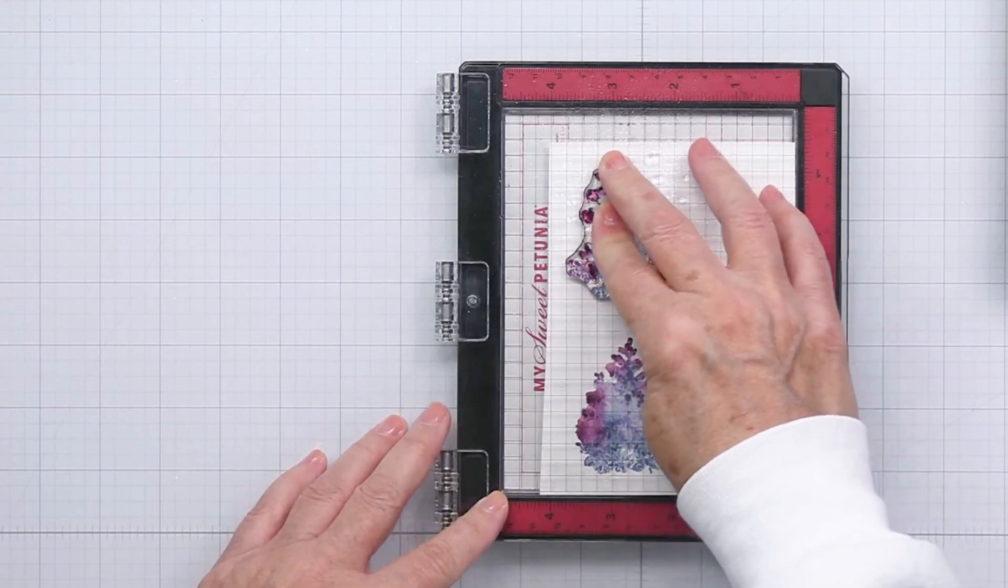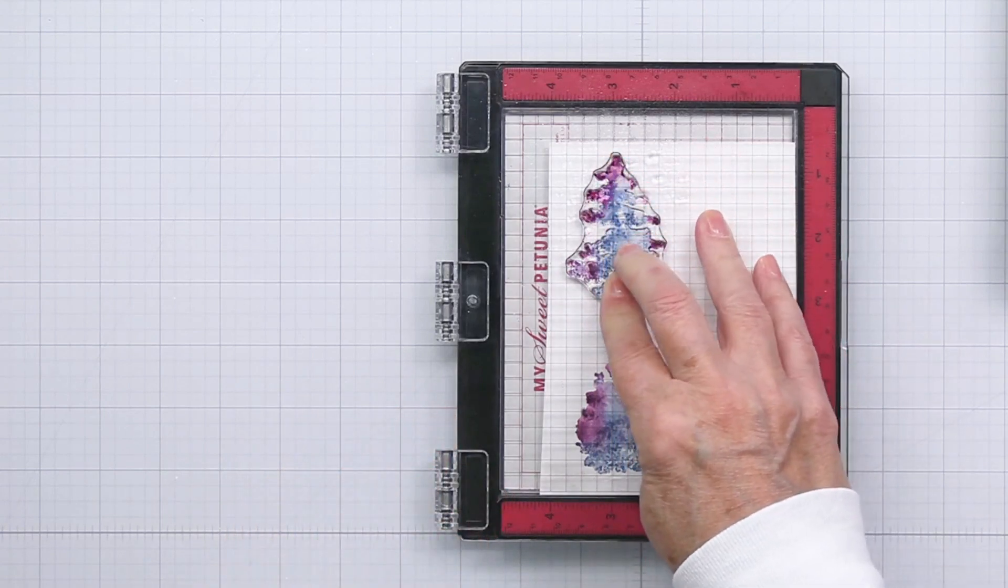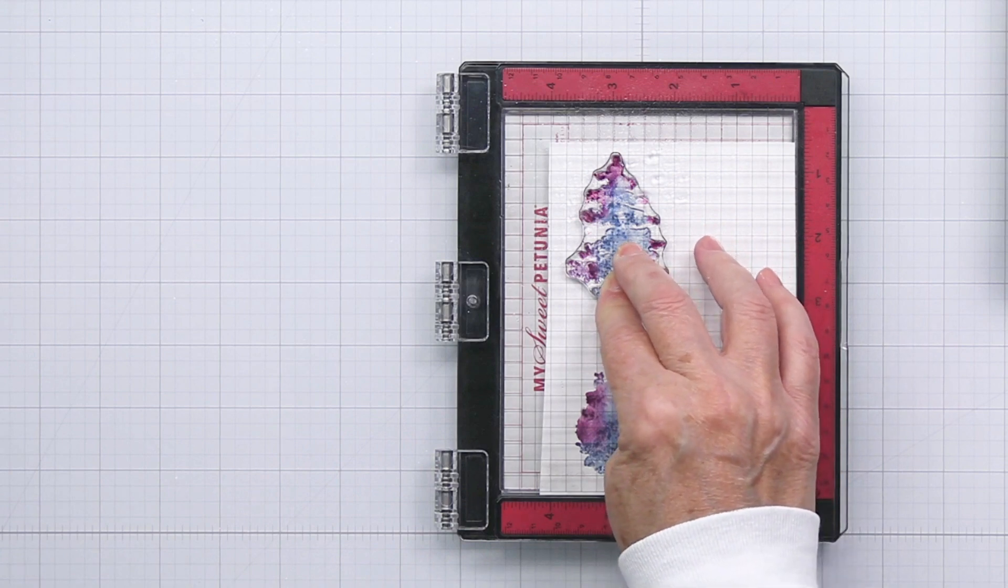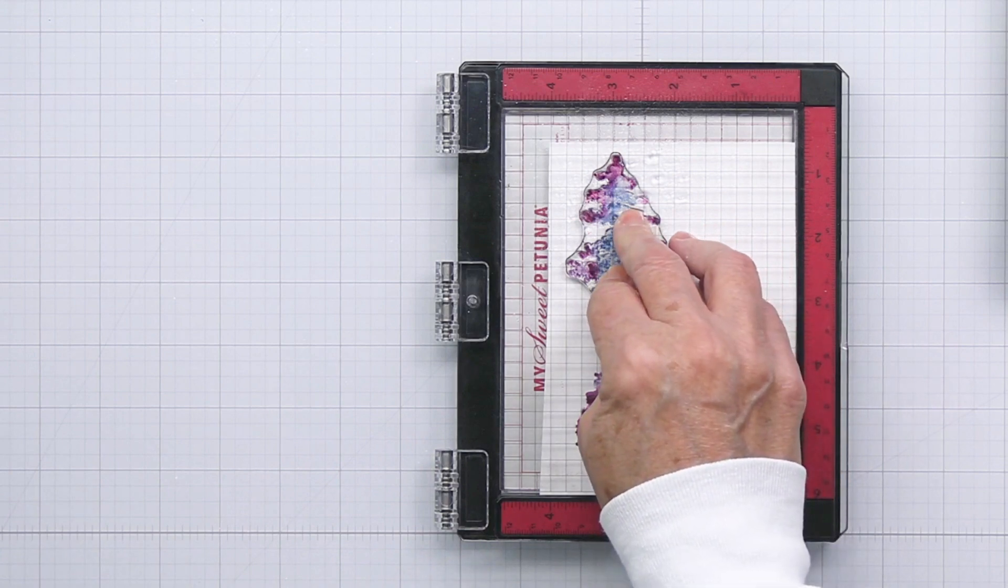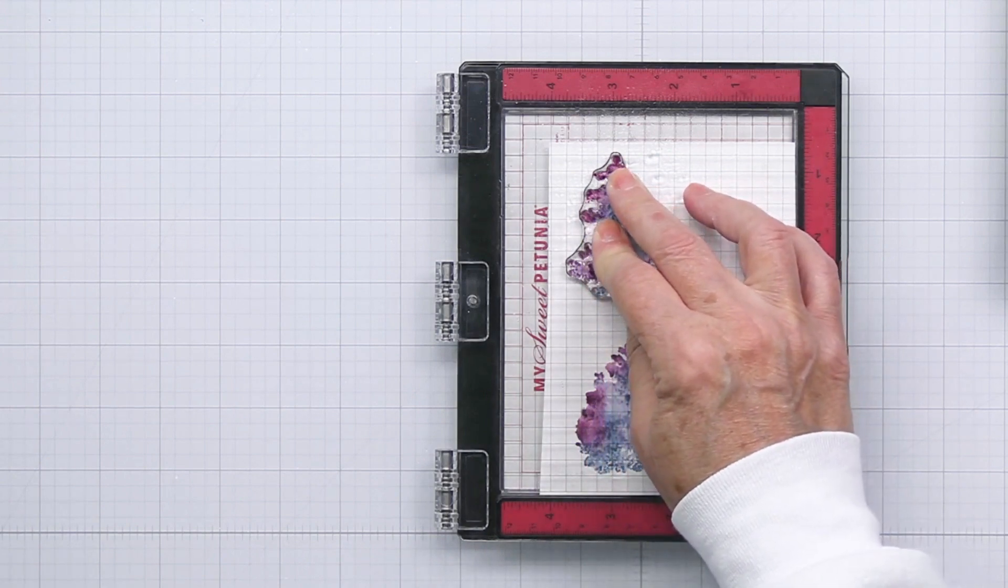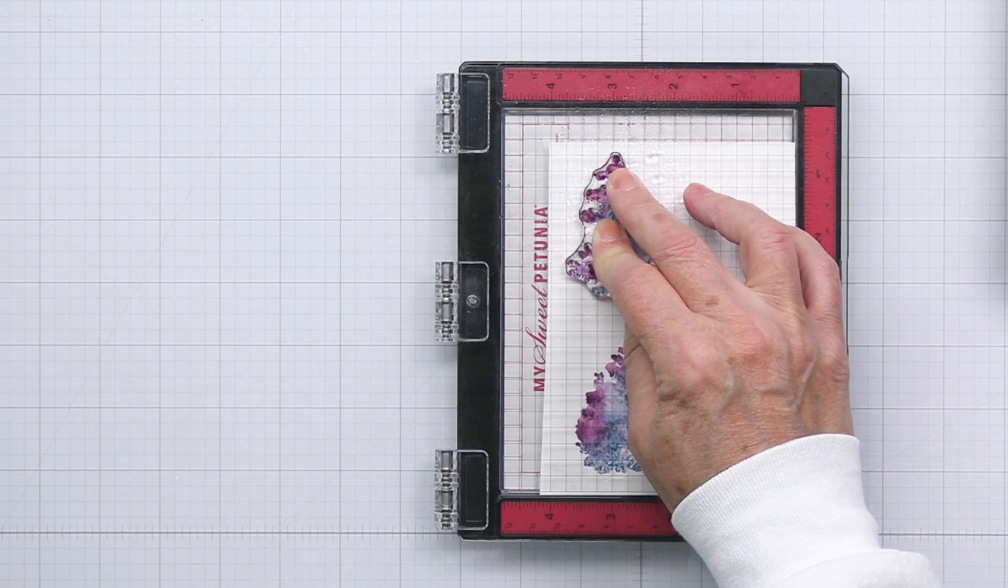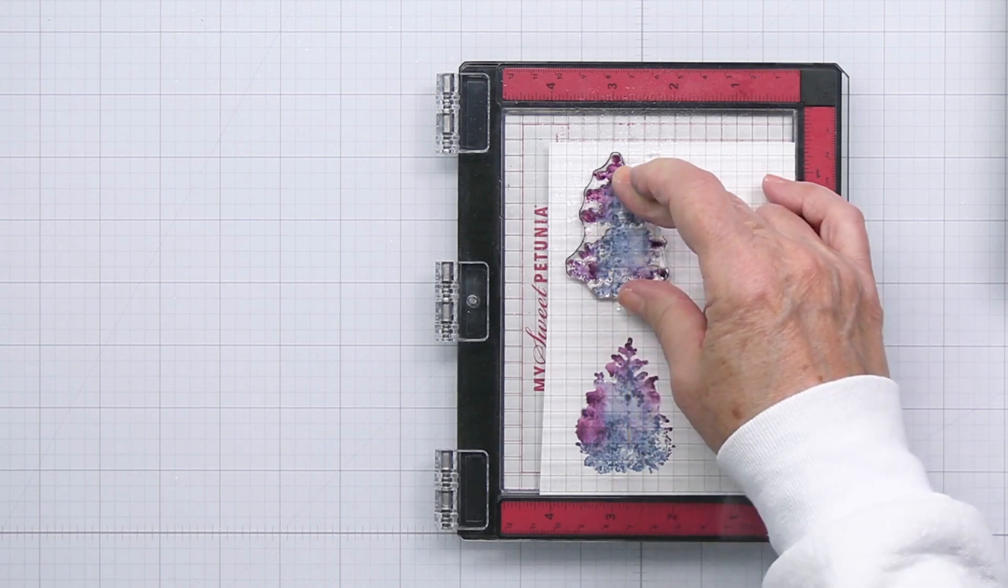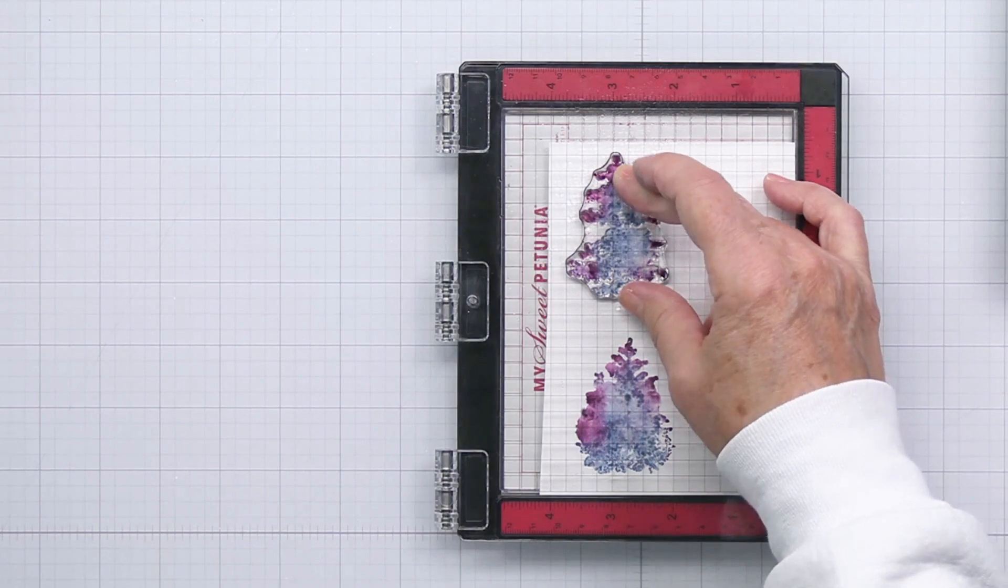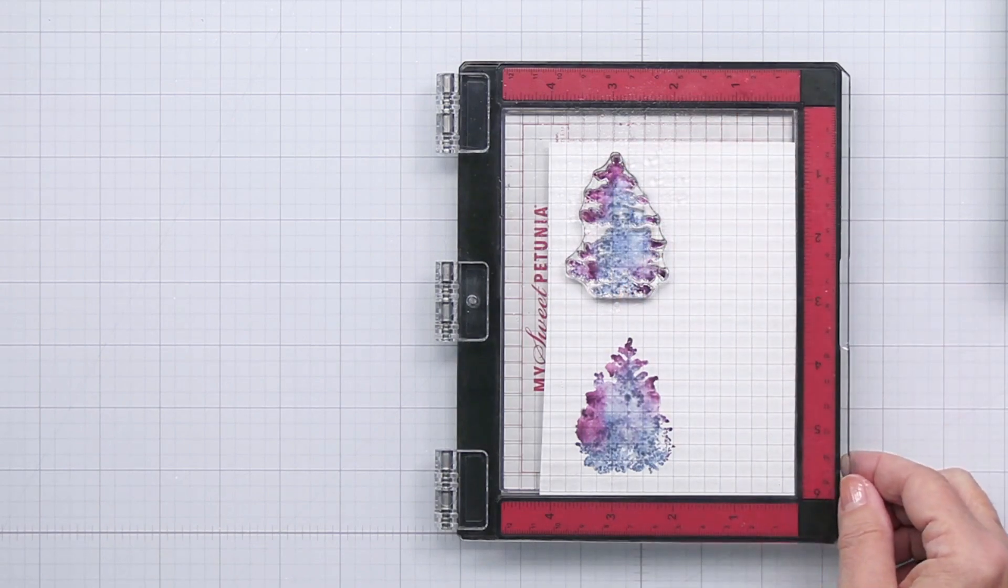I'll go ahead and do that same water spritzing and then give that a good press onto the heavy stock. You could use watercolor paper as well for this technique if you want to. The heavy stock does take this treatment really nicely. Once again, giving that just a really nice press, allowing that ink to absorb into the paper before I lift that off.